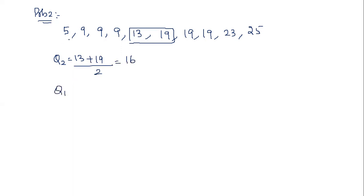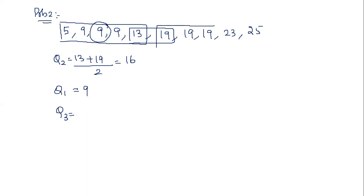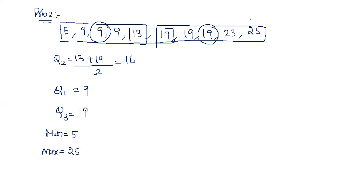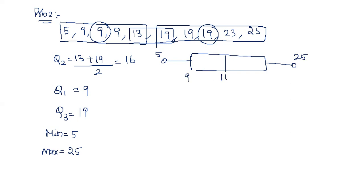To calculate Q1, we take the lower five samples and find their median, which is 9. So Q1 is 9. To calculate Q3, we take the upper five samples and find their median, which is 19. So Q3 is 19. The minimum value of the data set is 5 and the maximum value is 25. We can now draw a box plot with values 5, 9, 16, 19, and 25.